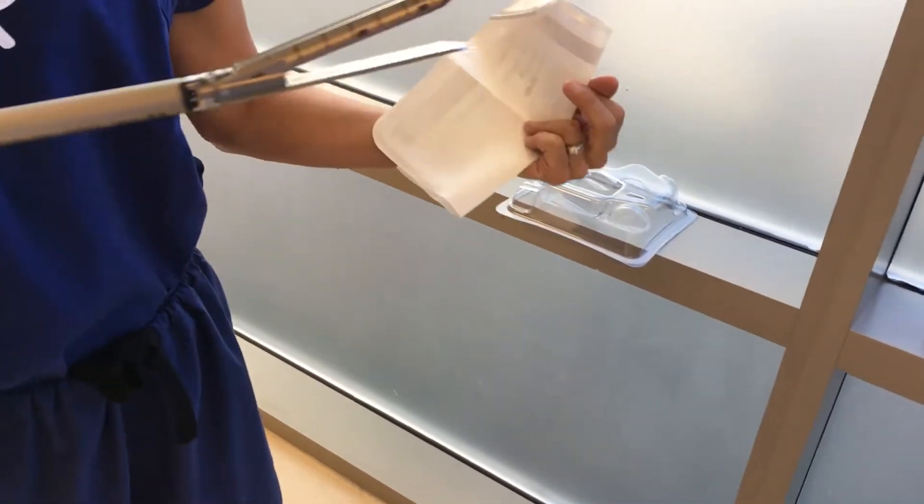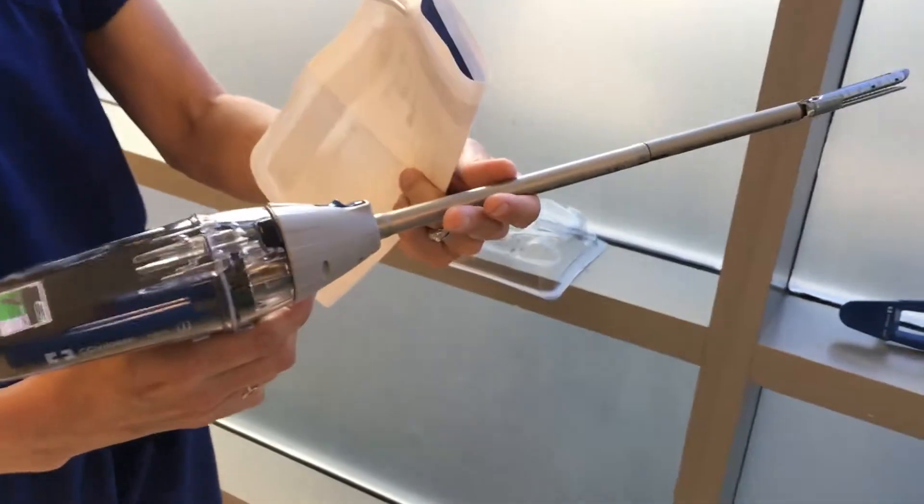Then you pull it out of the trocar, either closed or open. Preferably closed so that it doesn't pull the trocar out.